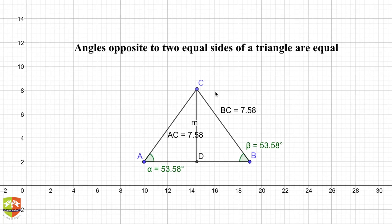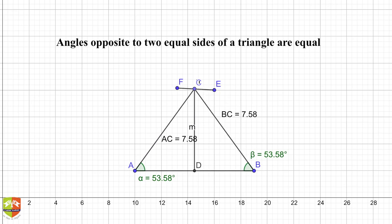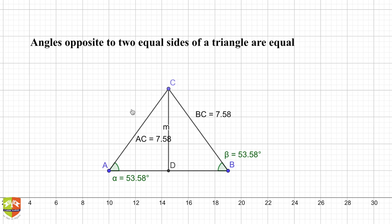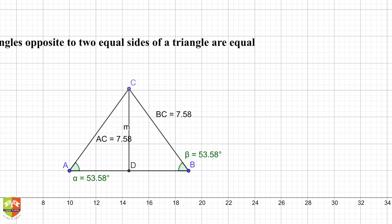Let me shift this diagram sideways to get some space to write. The construction is: CD is bisector of angle ACB. Now in triangle ACD and triangle BCD, what do we know?